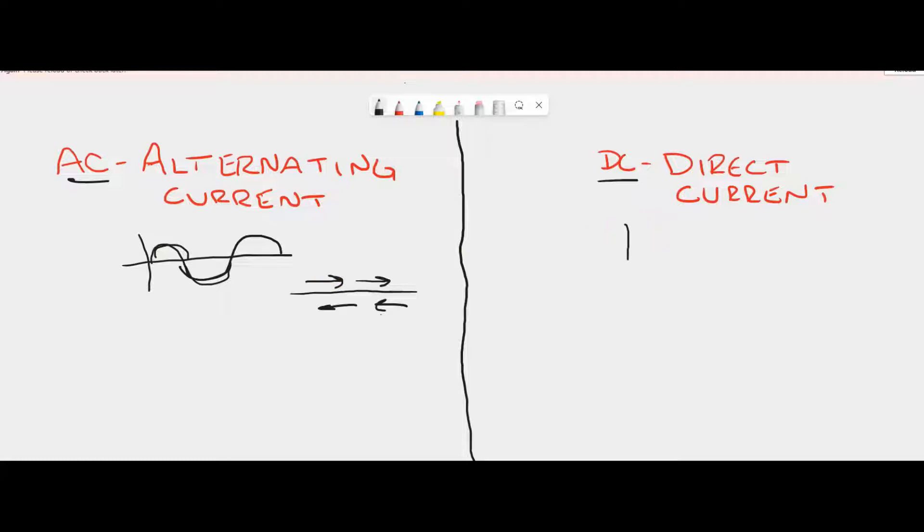DC, or direct current, maintains a straight line current value. It doesn't change.